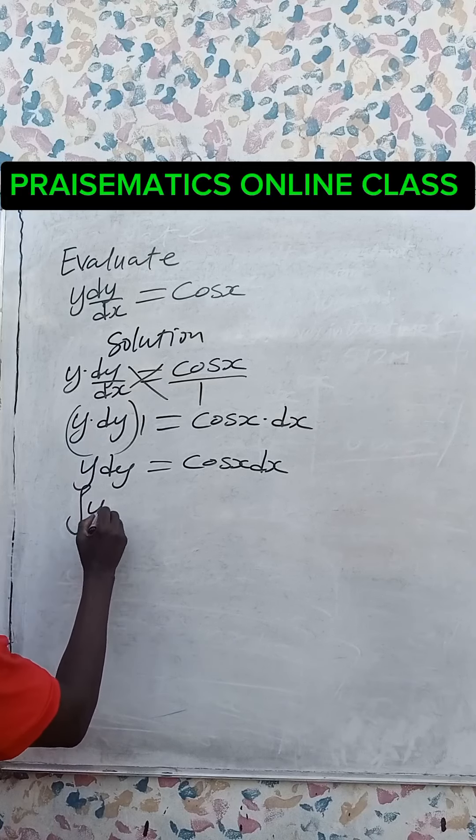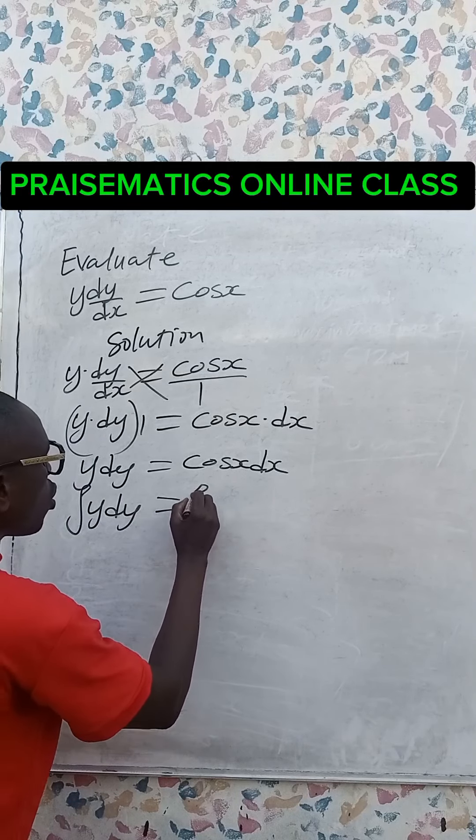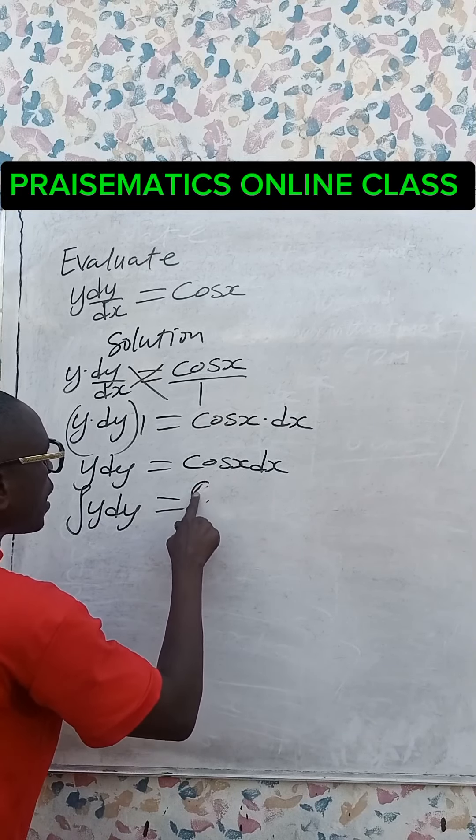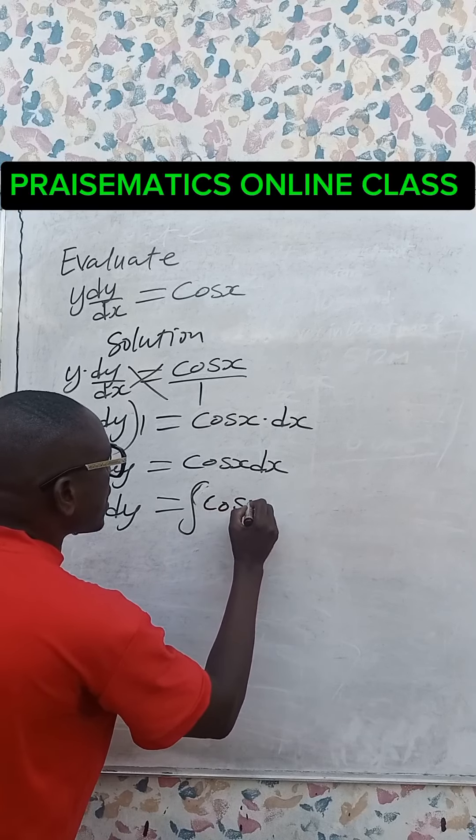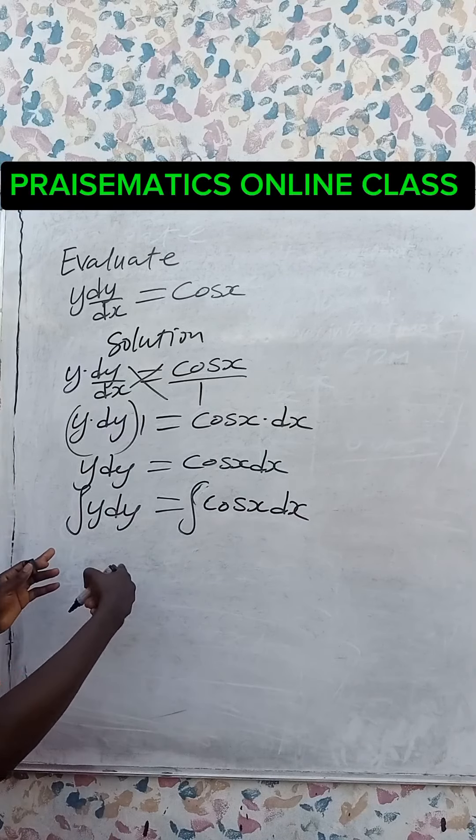Integrate both sides. Integral of y dy equals integral of cos x dx. We integrate both sides.